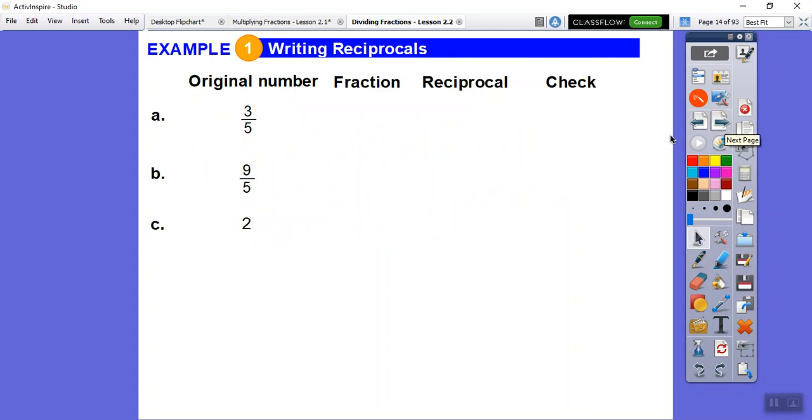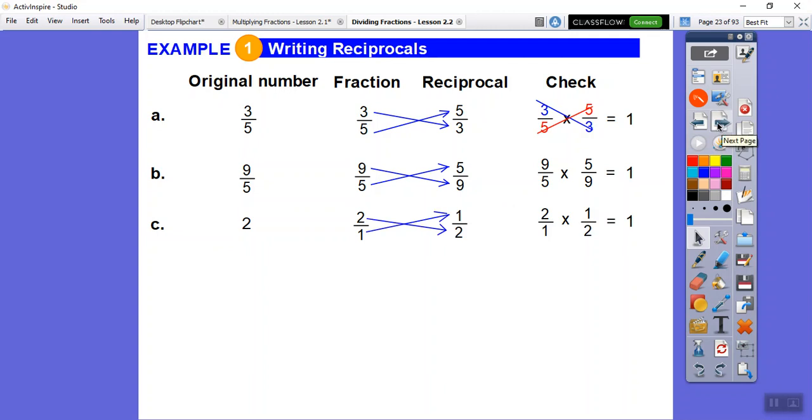So here's some original numbers. We're going to write these as a fraction. These two are already written as a fraction, three-fifths and nine-fifths. And then two, we'll write that as two over one. Anything can be represented as two over one. So the reciprocal of three-fifths is just flip it, so it's five over three. Do you see how the three goes down here and the five goes up here? That just means the reciprocal. To check, we're just going to multiply those and do those equal one. Yeah, those cancel, those cancel, they equal one. The reciprocal of nine-fifths is five-ninths, and the product is one. The reciprocal of two over one is one over two, and the product of two over one and one over two is one.